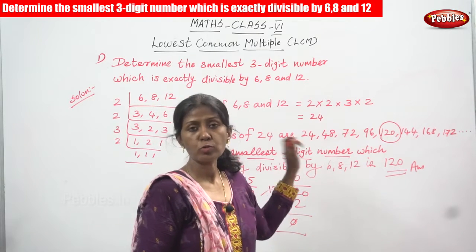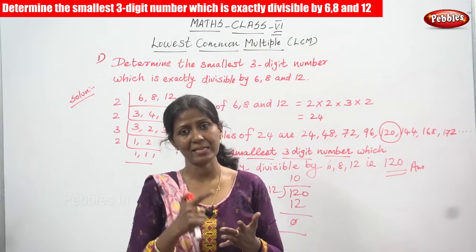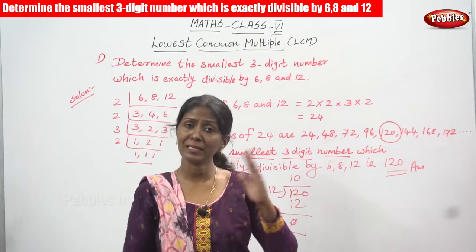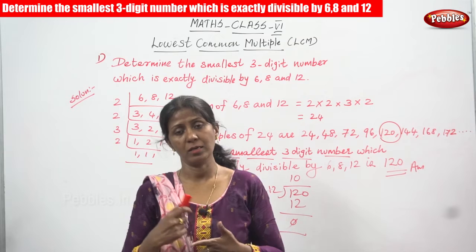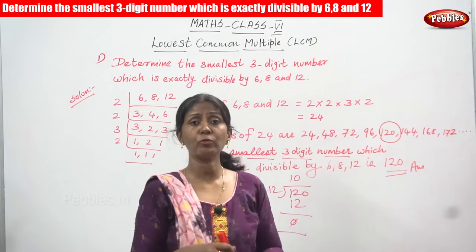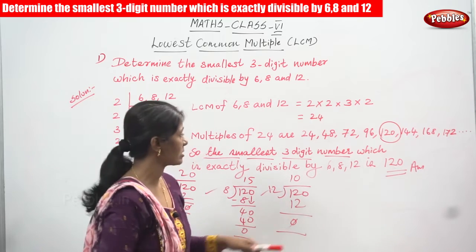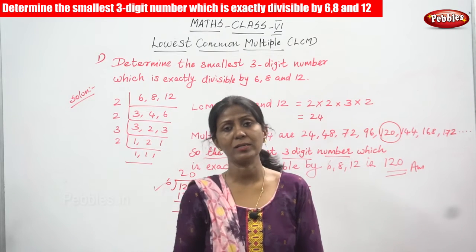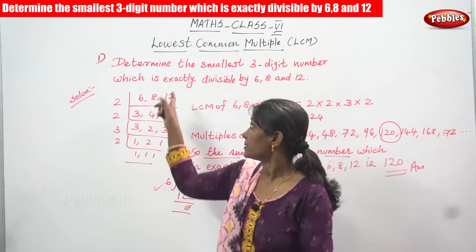To summarize the method: first find the LCM of 6, 8, and 12, which is 24. Then write the multiples of 24 and find the smallest 3-digit number among them. That number is 120, which is exactly divisible by 6, 8, and 12. This is the complete method for this type of problem.